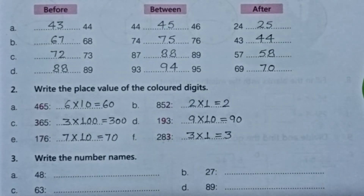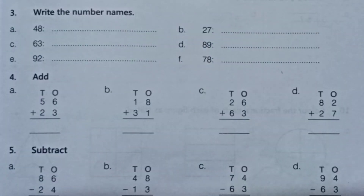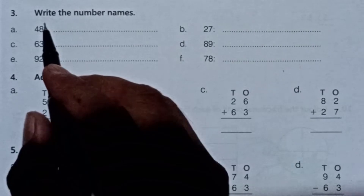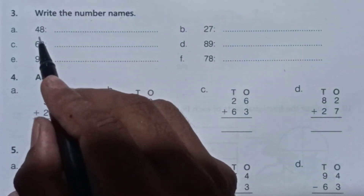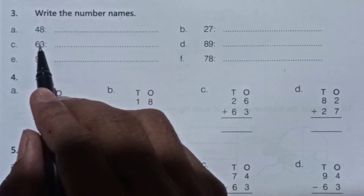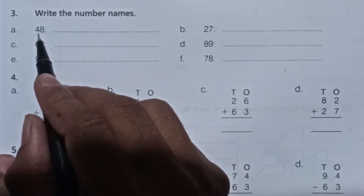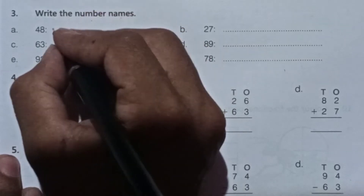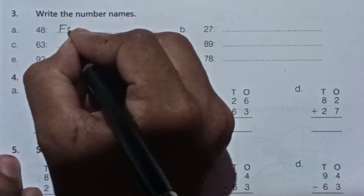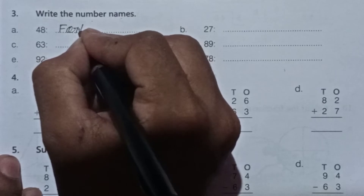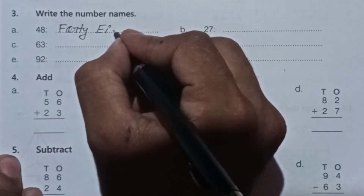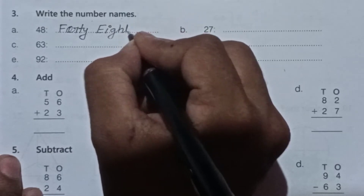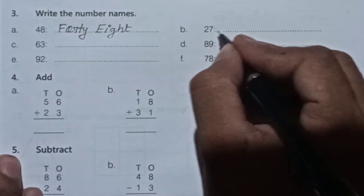Come to question number 3: write the number names — we have to write out the number names for the given numbers. First (a) is 48 — forty-eight. Next (b) is 27 — twenty-seven.